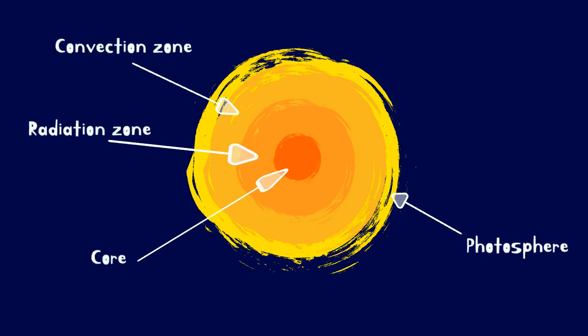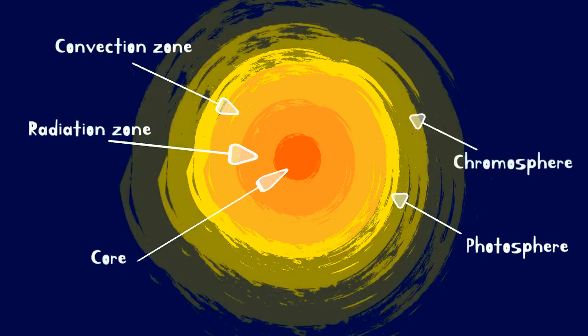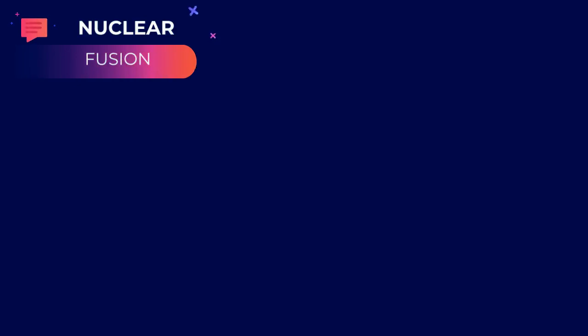The atmosphere of the Sun consists of two layers, the chromosphere and the corona. Nuclear fusion occurs inside the core.